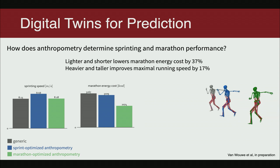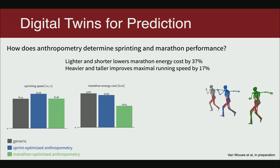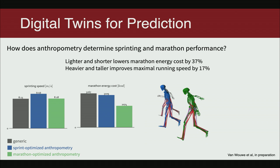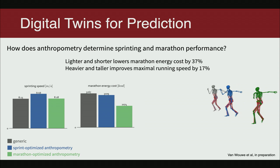We found that an optimal skeleton for sprinters can increase their speed by 17%. In the simulation you're seeing on the screen, the blue skeleton is optimized for sprinting and the green skeleton is optimized for marathon running. You can see that the blue skeleton reaches the gait cycle earlier than the other two sprinters.